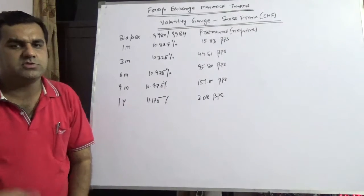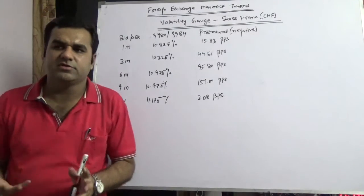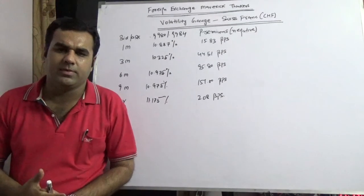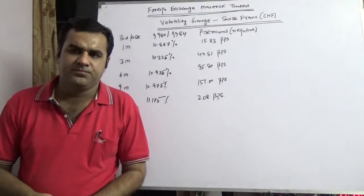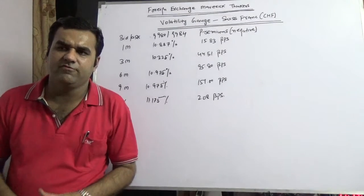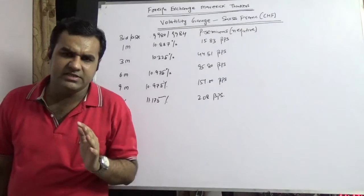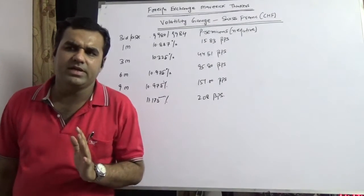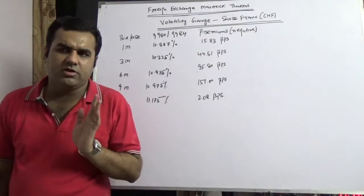Before moving ahead, let me give you a small demonstration of what Swiss franc is all about. Swiss franc is amongst the most powerful volatility gauges in the world. What do you mean by volatility gauge? A volatility gauge is a gauge where if this currency is moving higher or facing volatility, then there is a certain probability that the world would see volatility or all the crosses and direct pairs would see volatility.